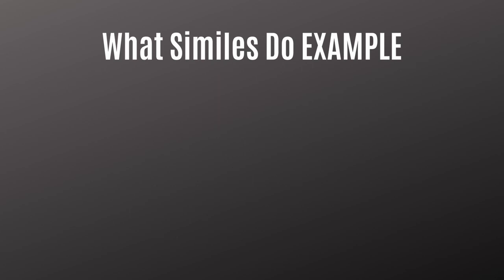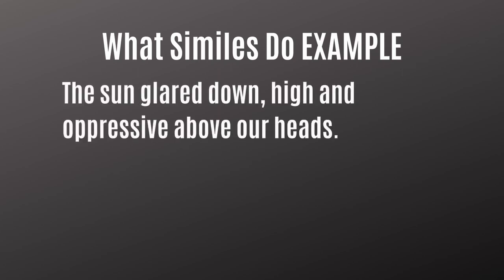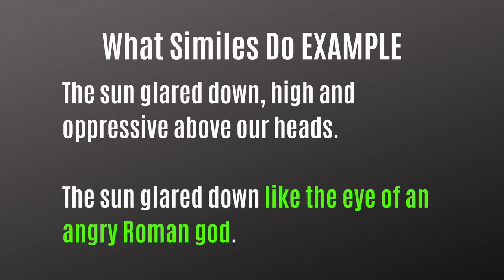Here's an example of a simile that is vivid, accessible, and emotional. The first sentence without a simile: 'The sun glared down, high and oppressive above our heads.' That's not a bad sentence, but we can do better. The rewrite: 'The sun glared down like the eye of an angry Roman god.' That simile leaps right off the page — it's vivid, it's accessible, we can feel like that sun is looking down on us. And it's emotional; we get that anger from the Roman god, almost seeing the eye of the sun staring down on the people in the story. That's an effective simile that could potentially make your story stronger.